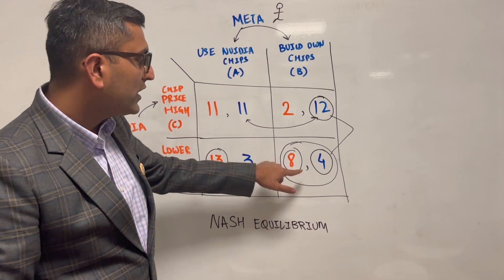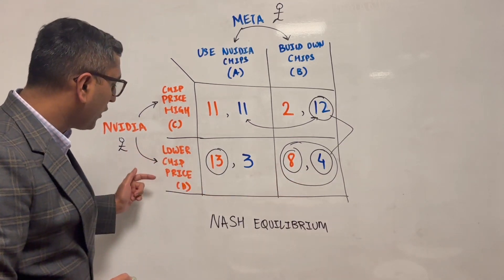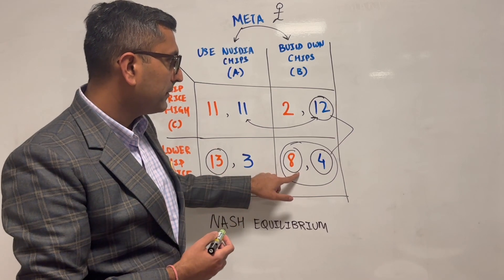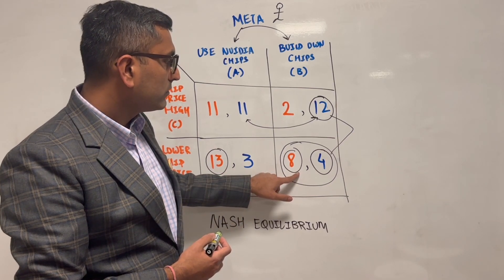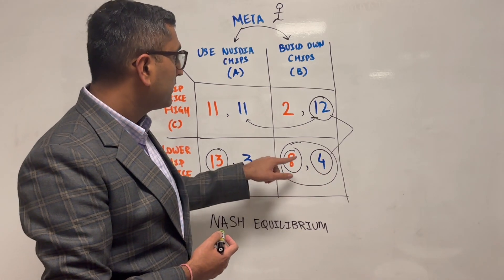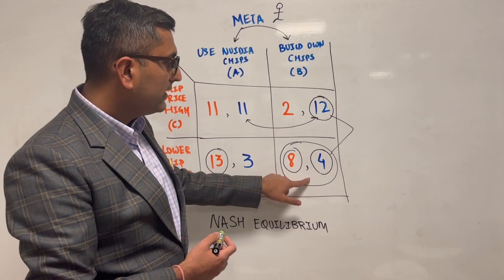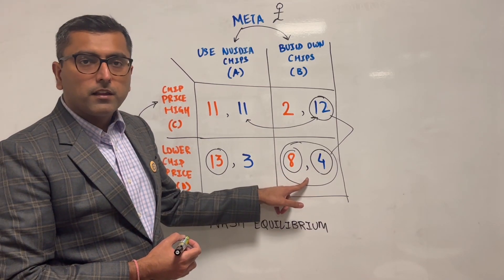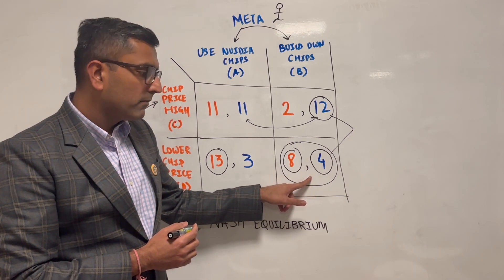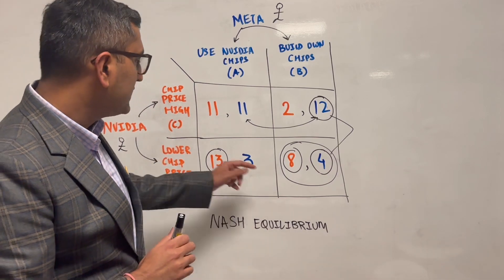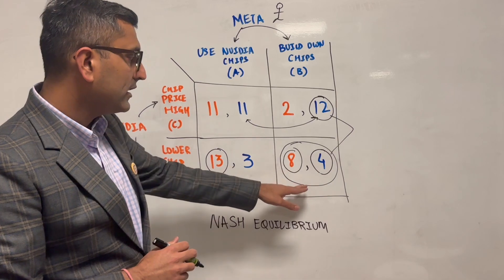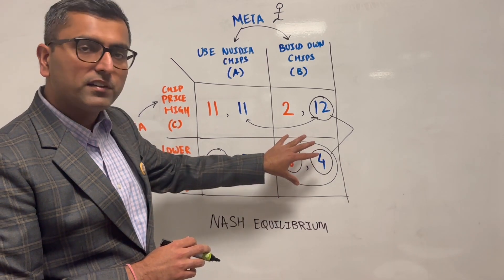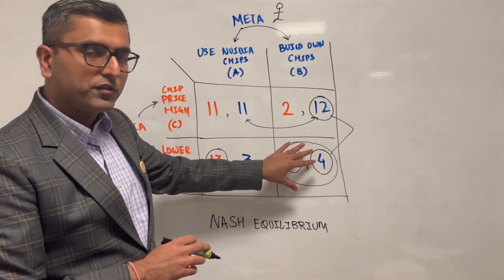So they will always go with this and they will always land here. Meaning there is no incentive for them to change their decision. Nvidia will always go with D, Meta will always go with B because there is an equilibrium. We see here that Nvidia and Meta have an equilibrium. This is called a Nash equilibrium.